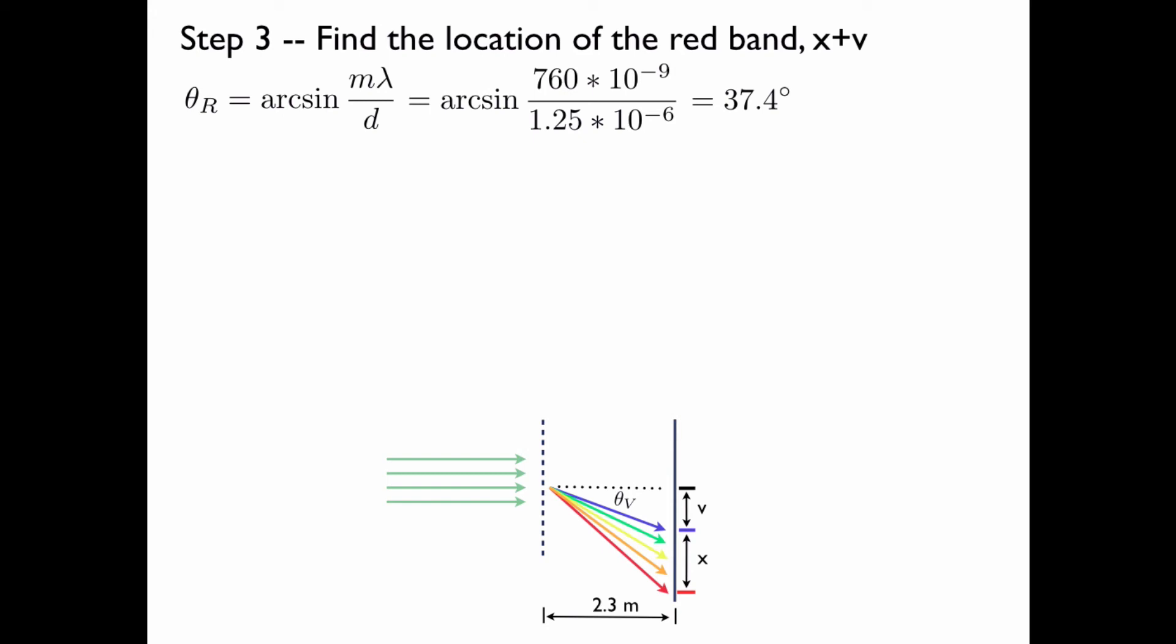So this angle is 37.4 degrees. And once again, from the previous slide, we have X plus V is equal to L tan theta, which is equal to 2.3 tangent of 37.4, or 1.76 meters.